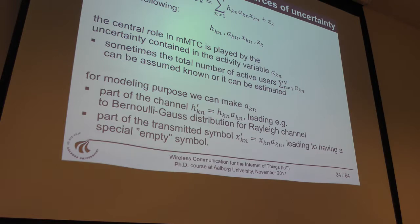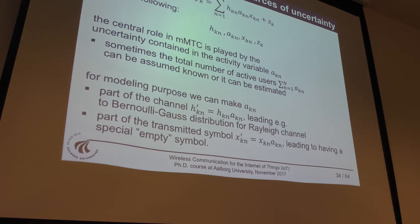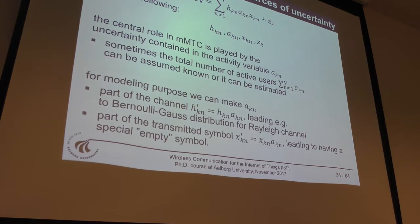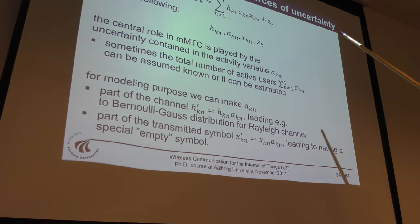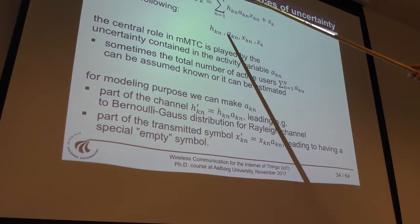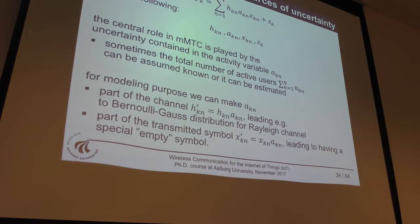For modeling purposes, we can make akn part of the channel. This is just a mathematical manipulation: our effective channel is not hkn but hkn·akn. For example, if hkn is a complex Gaussian variable with a certain mean, and akn is a binary Bernoulli variable, then our channel has a Bernoulli-Gaussian distribution — the type of fading is artificially modulated by the user activity.